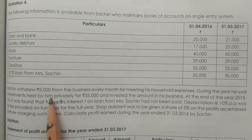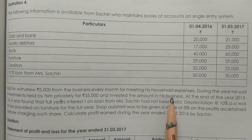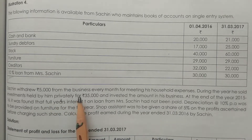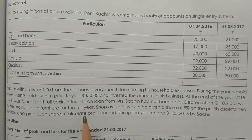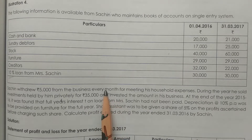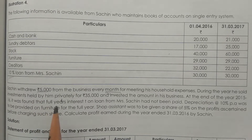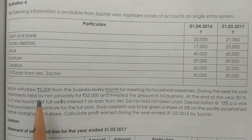Sachin withdrew 5,000 rupees from the business every month for meeting his household expenses. This is treated as drawings — personal withdrawals from the business.